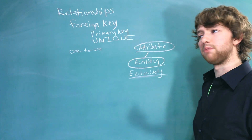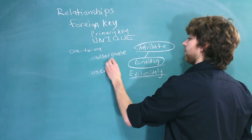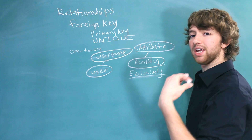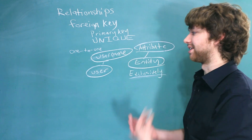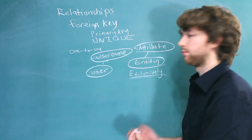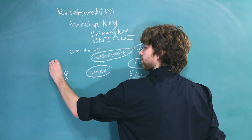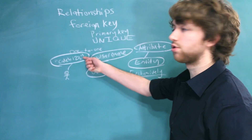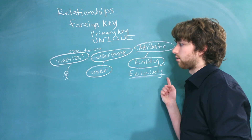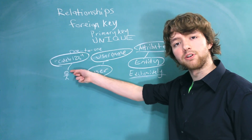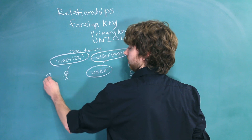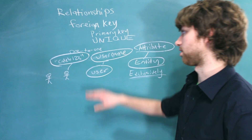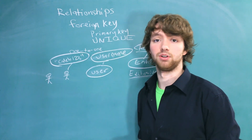An example of this might be a user and a username. In this situation, the username is the attribute that describes the user. So here's a user, and his username might be Caleb123. That specific username exclusively describes that specific user. If we have another user over here, he's not going to get that name — he'll have to come up with something on his own. Good luck, because you cannot compete with Caleb123.